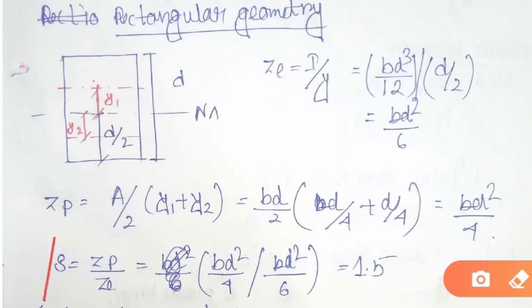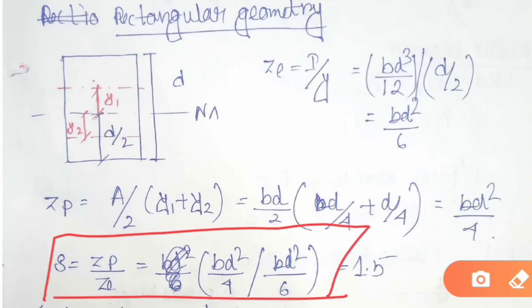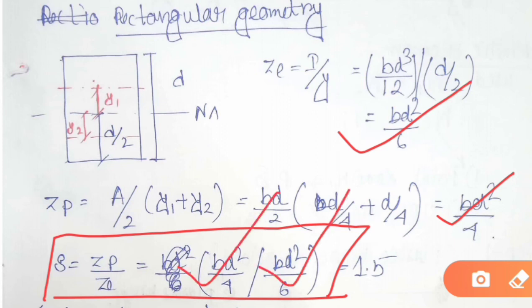Now, as mentioned earlier, the shape factor is the ratio of ZP to ZD. We have found ZP = BD²/4 and ZD = BD²/6. So the shape factor = (BD²/4) / (BD²/6) = 1.5. Therefore, for rectangular geometry, the shape factor used in plastic analysis of steel structures is 1.5.